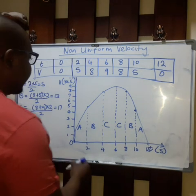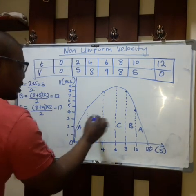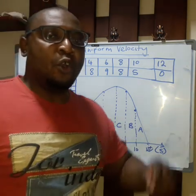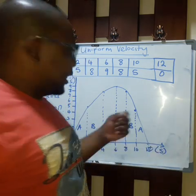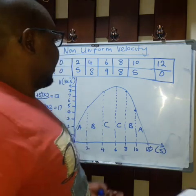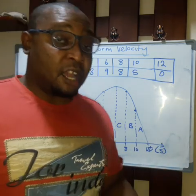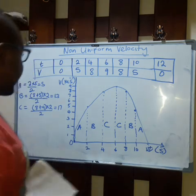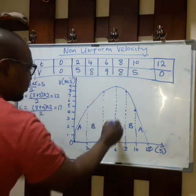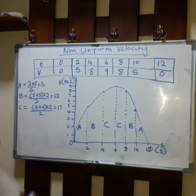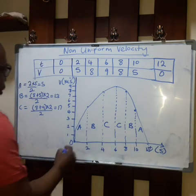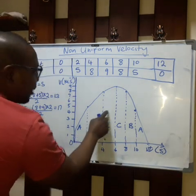I can partition this graph into different sections. To find the distance under the graph — this is not a straight line — I have to find the area under the graph, which becomes the distance covered by the object. From 0 to 2 I draw dotted lines, so the intervals in terms of time is 2 seconds on the horizontal axis. I notice some shapes inside.